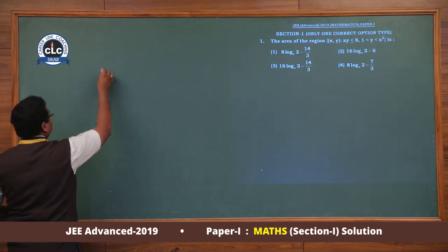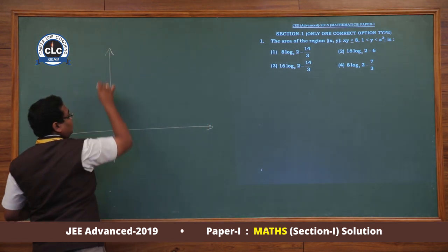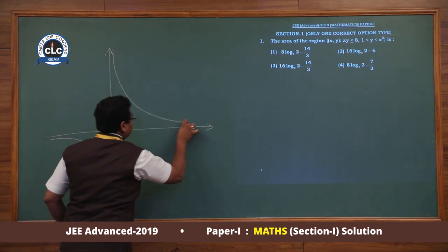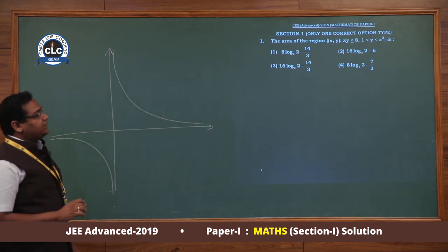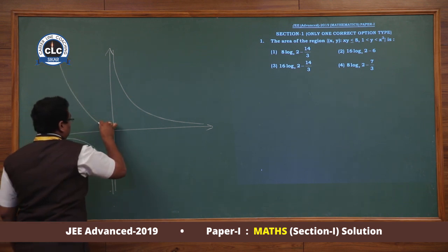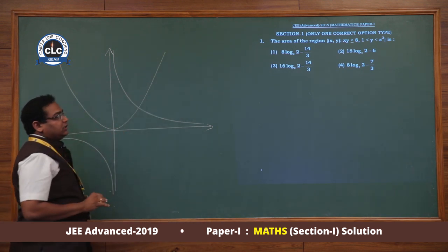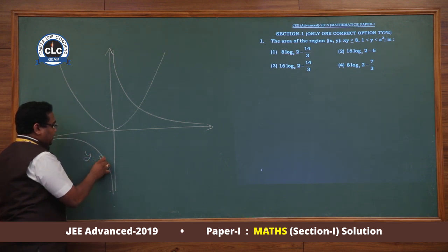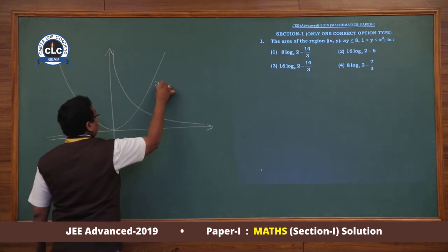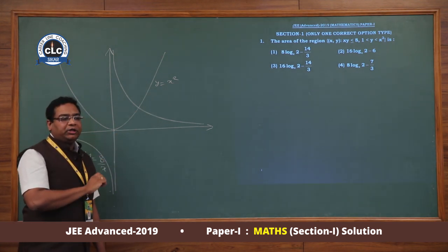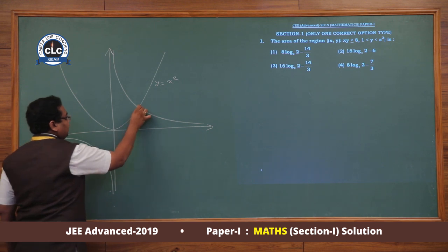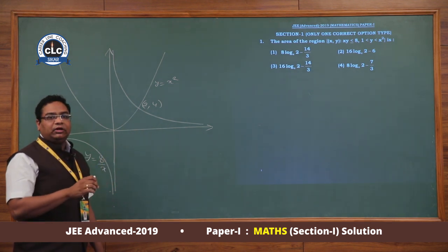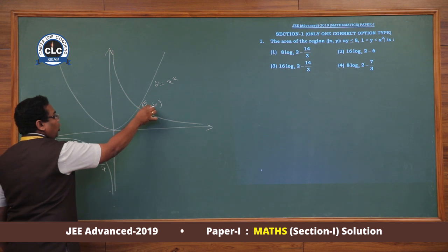If we plot this region, then xy = 8 is a rectangular hyperbola. We can plot it this way. y = x² is a parabola. To find the point of intersection of both: y = 8/x and y = x², so 8/x = x², that is x³ = 8, that is x = 2. So x-coordinate is 2, y-coordinate is 4. The third curve is y = 1, which is a horizontal line.